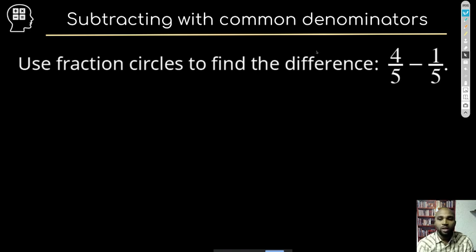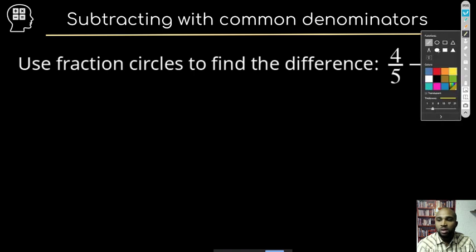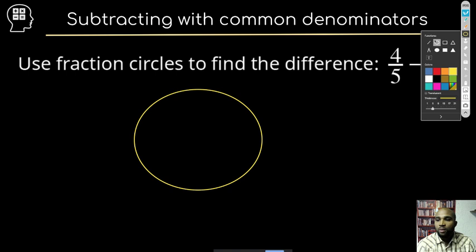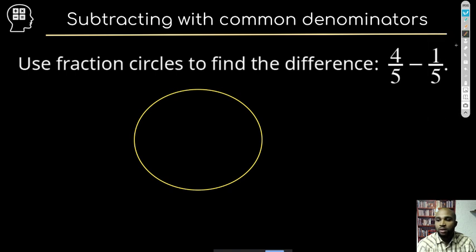Now let's use fraction circles to find this difference — so now we're talking about subtracting. It's going to be very similar to what we did when we added. I'm going to draw a circle and model what's going on in this fraction. We have four-fifths, so we divide everything into fifths first.